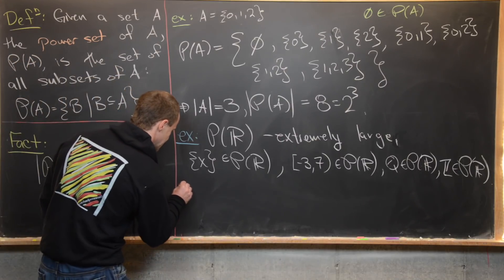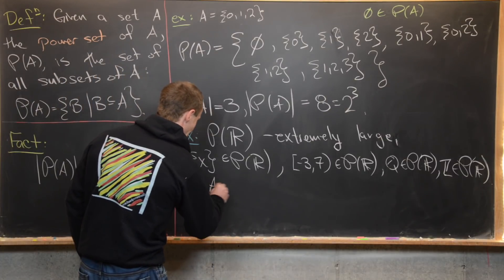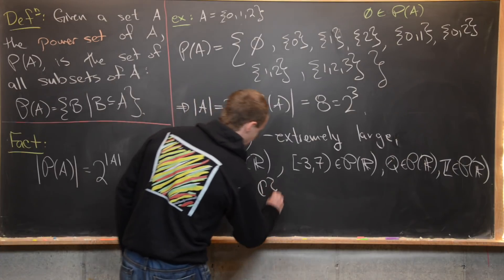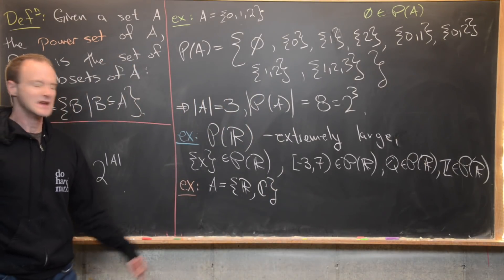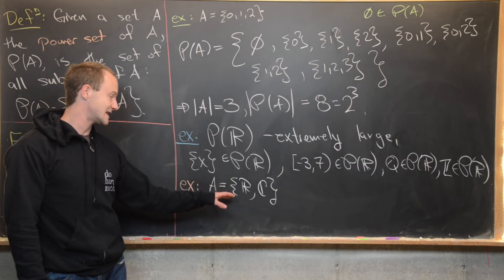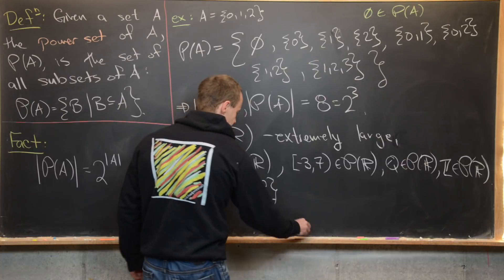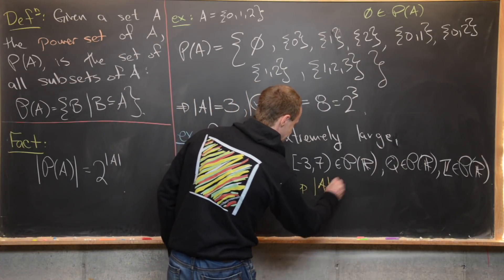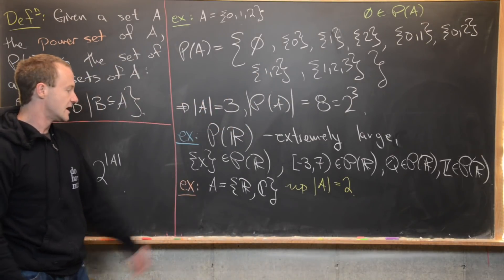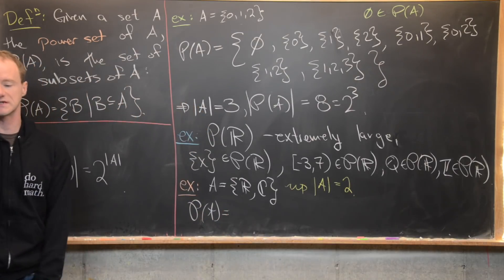Let's look at one more example where A is the set containing the real numbers and the complex numbers — and we have to be careful here. This is not the union of ℝ with ℂ, but the set whose two elements are the set ℝ and the set ℂ. So in this case, the size of A is actually just two.